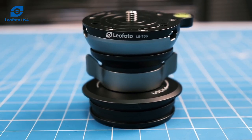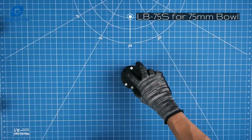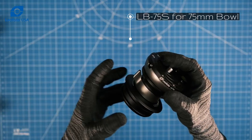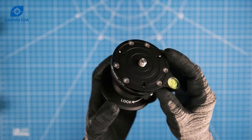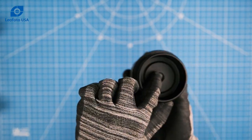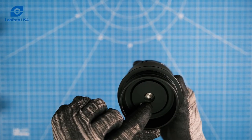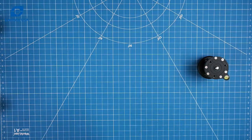This is the LB-75S. It has an integrated 75 millimeter bowl adapter and it fits into 75 millimeter compatible tripods. The leveling base itself is not removable. It comes as one attached piece.